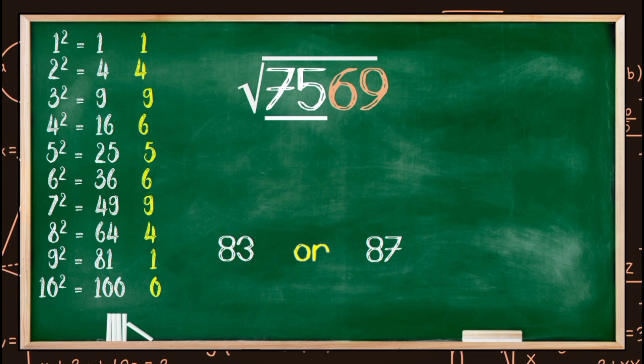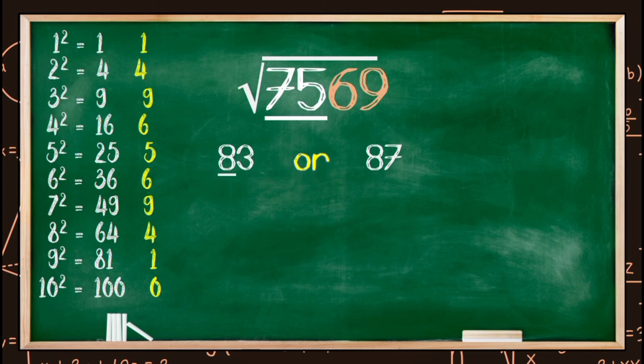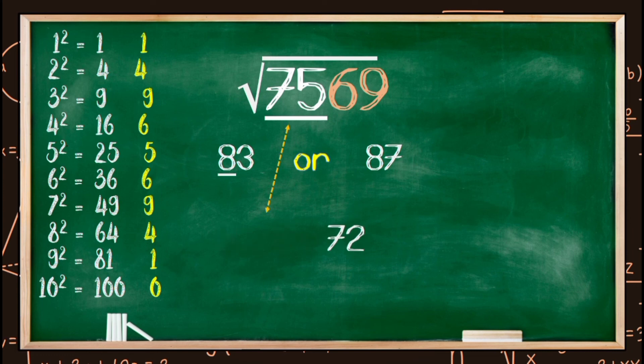Step four: find the exact unit digit. To find the exact unit digit, we consider the tens digit, which is 8, and the next term, which is 9. We multiply these two terms: 8 times 9 equals 72. Since 75 is greater than 72, the square root of 7569 will be the bigger of the two options — that is 87. And that is our answer.